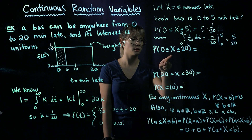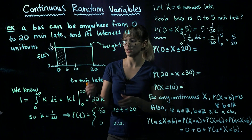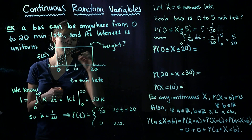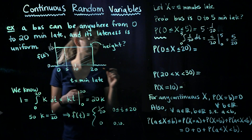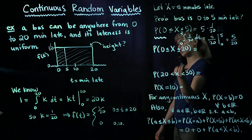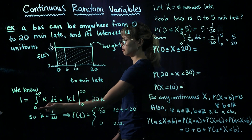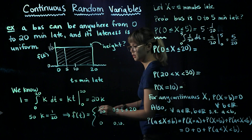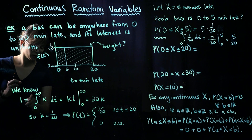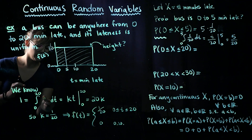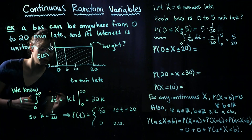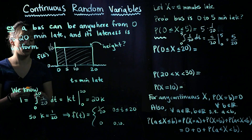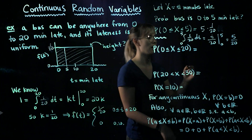How about the probability that x is between 0 and 20? We're looking at the entire area. We already calculated this — it's the integral from 0 to 20 of 1/20, and this is just equal to 1.